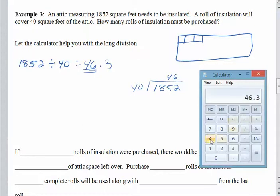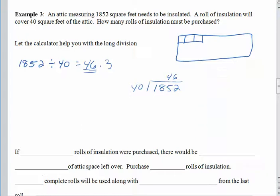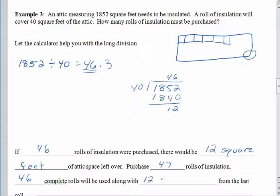So let's see what happens when we work the long division. 1,852 divided by 40 we know goes in 46 times. Find our calculator. 40 multiplied by 46 is equal to 1,840. So we will write that down below. 1,840. And subtract. And see that we have a remainder of 12. So if we purchased 46 whole rolls of insulation, we would have 12 square feet of attic space left over. Remember, we were dividing up this attic space, covering it up with these rolls of insulation. And here's our teeny tiny corner that didn't get covered.